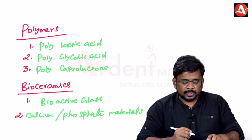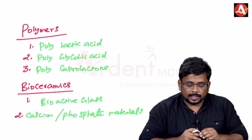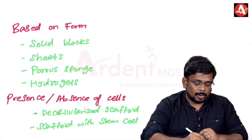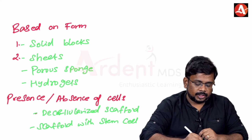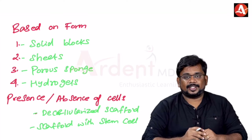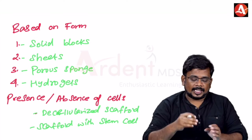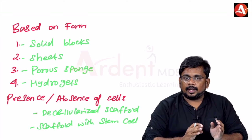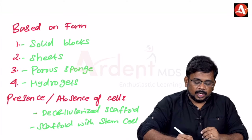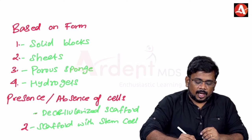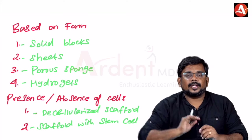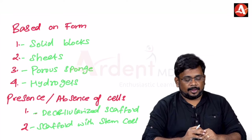Scaffolds are also classified based on form: solid blocks, sheets, porous sponge, and hydrogels. Based on the presence or absence of cells, they are classified into scaffolds with stem cells and decellularized scaffolds — where the cellular part is removed, leaving the extracellular matrix.